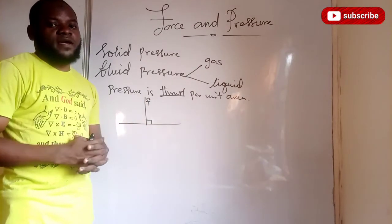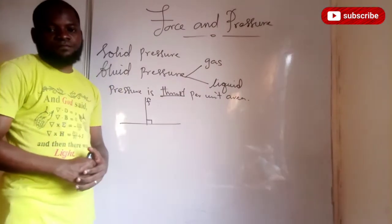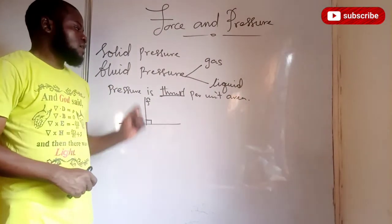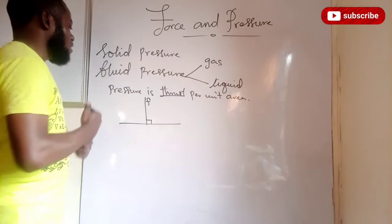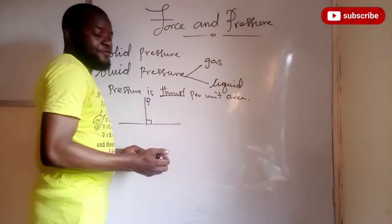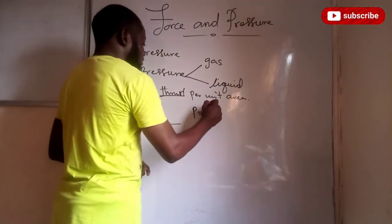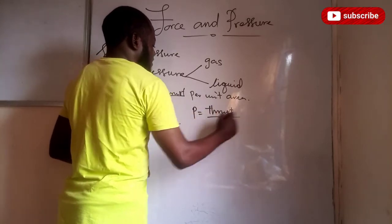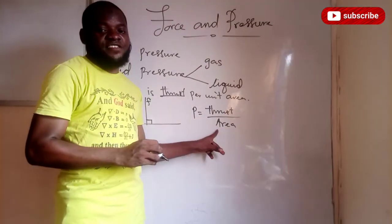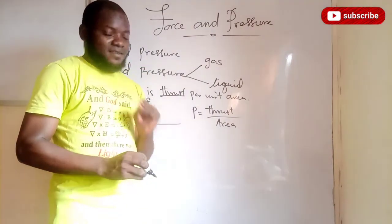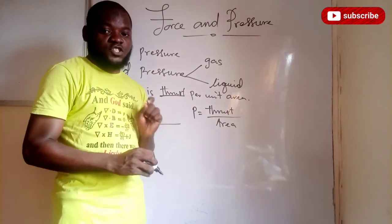So your textbook is also correct by saying pressure is the perpendicular force per unit area. Now if pressure is thrust per unit area, we have that pressure equals thrust divided by area. Your textbook says pressure is force over area — yes, for simplicity's sake that is why we use force over area, but that force is a perpendicular force, not just an ordinary force.